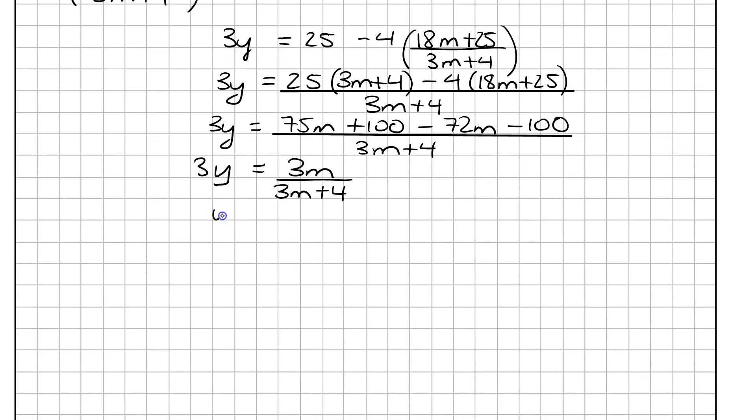So then just dividing across by 3, y is equal to 3m all over 3 times 3m plus 4. And I'm not going to multiply it in, because it should be obvious there to see that y can be cancelled top and bottom. So I get y equals m over 3m plus 4.